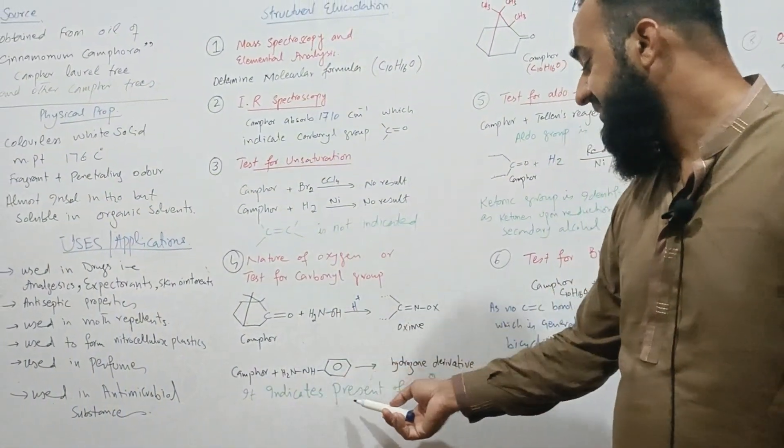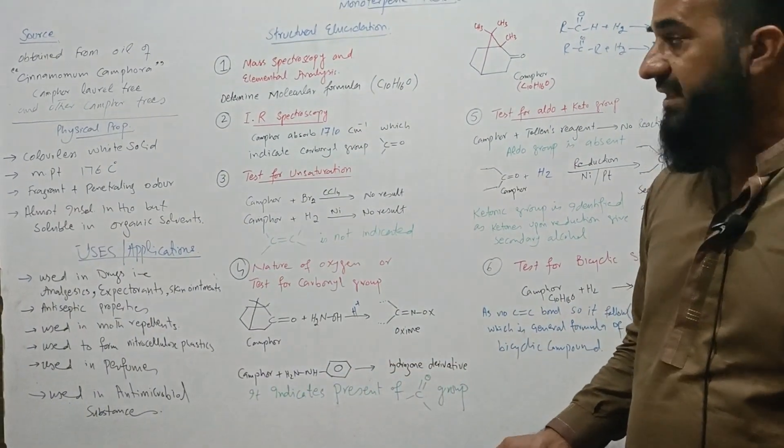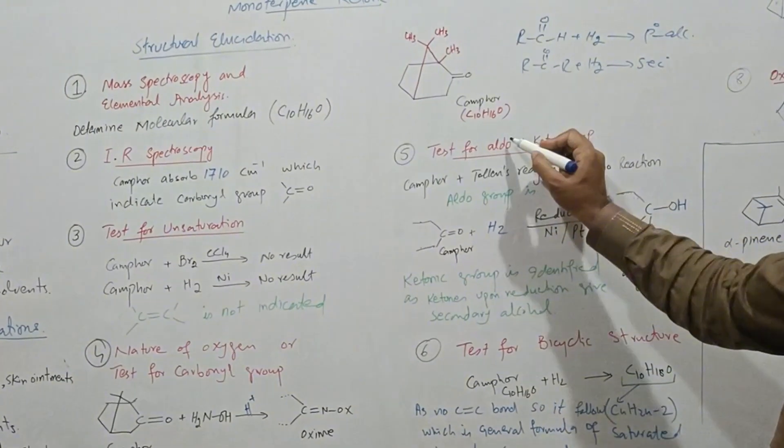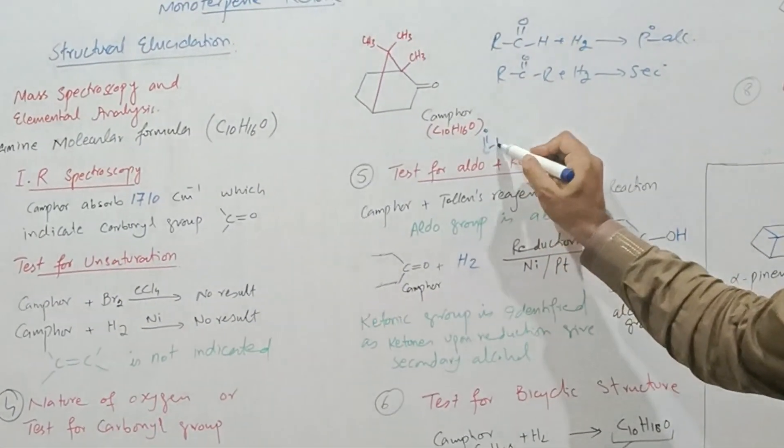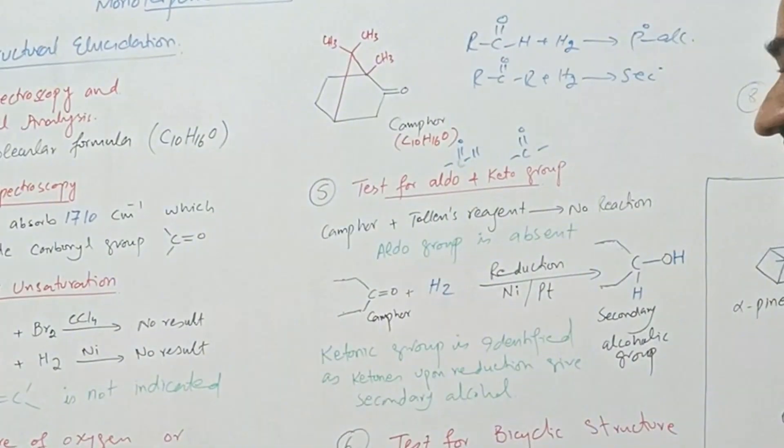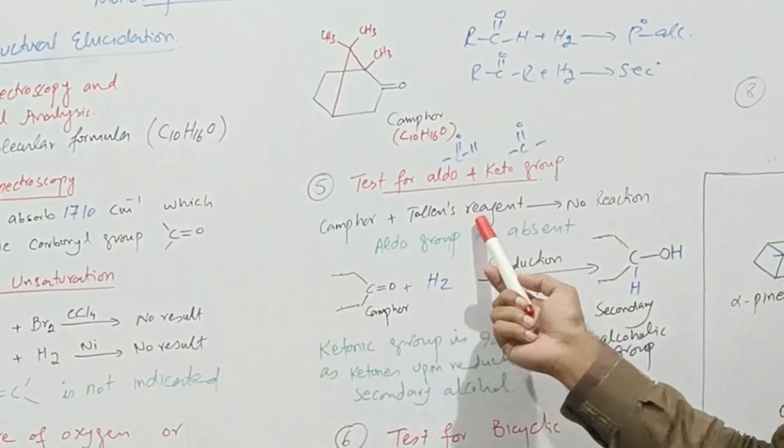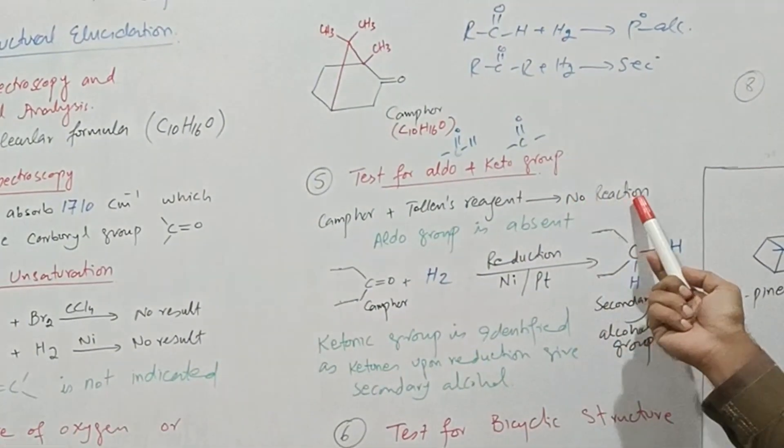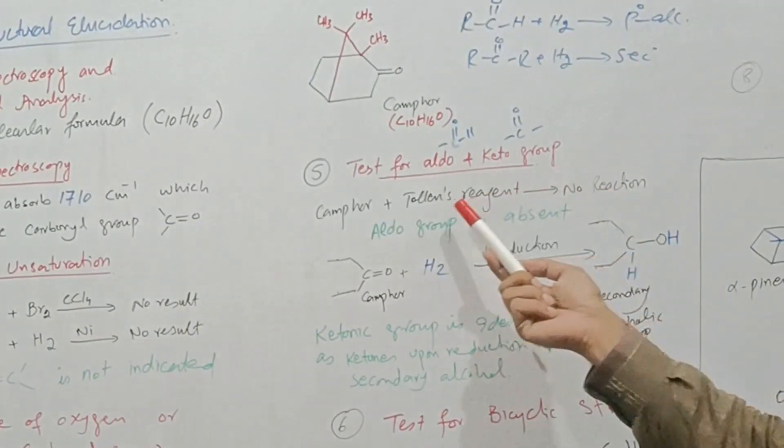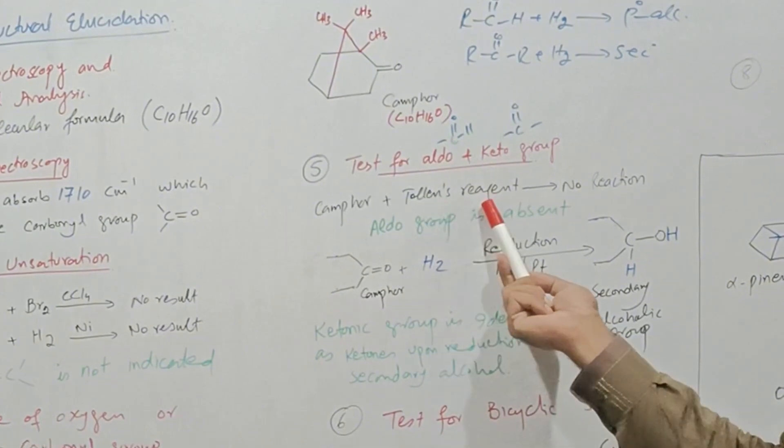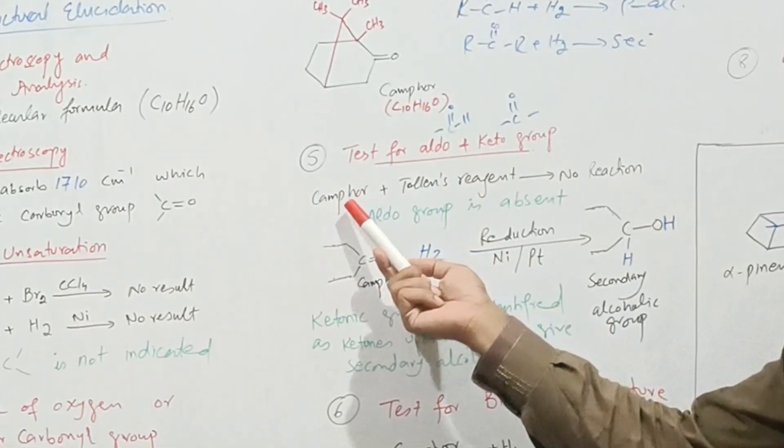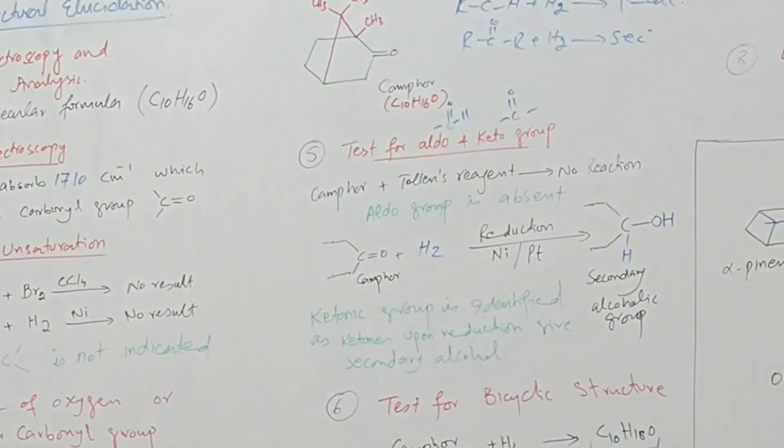So there are two types of carbonyl groups: aldo group in the form of formyl, other keto group. So which kind of carbonyl group is present? When camphor is treated with Tollens reagent, then no silver mirror obtained or no reaction. Because Tollens reagent is a weak oxidizing agent, it only oxidizes aldehyde but it cannot oxidize the ketonic group present in the camphor. It indicates that there is no aldo group present.